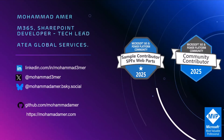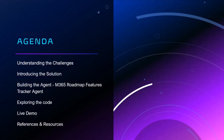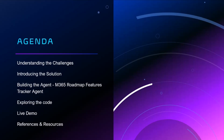Feel free to connect with me through the social links on the slide — you'll find my GitHub samples and blog posts there as well. Today's agenda is going to cover: understanding the challenges of staying updated with Microsoft 365 Roadmap features, introducing the solution using declarative agents, building the M365 Roadmap Features Tracker agent, exploring the code and a live demo, and then resources and references.